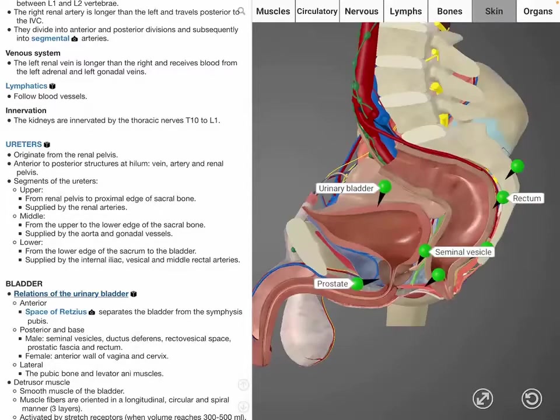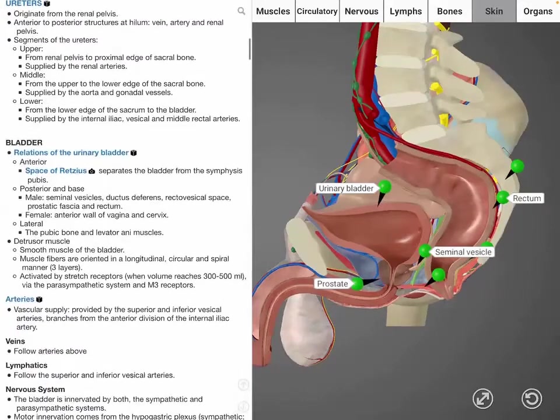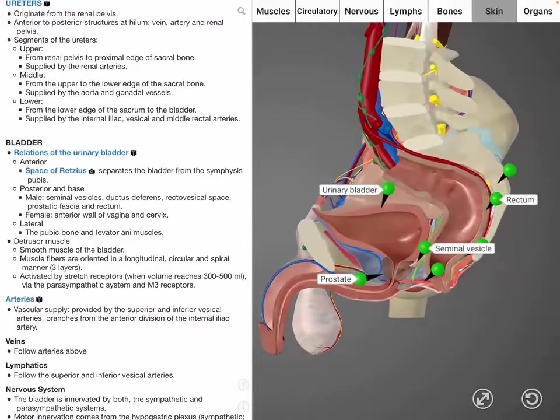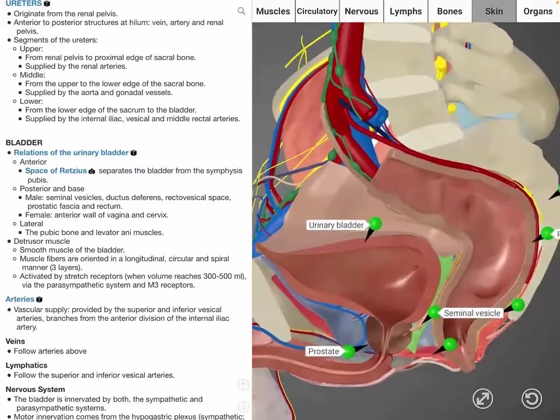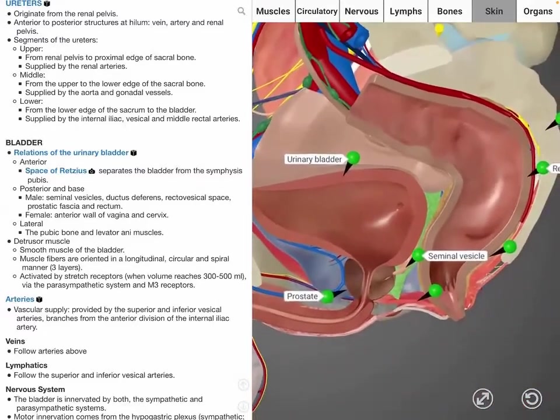For females, there are the anterior wall of the vagina and cervix, whereas for males, there are the seminal vesicles, vas deferens, rectovesical space, prostatic fascia, and the rectum.